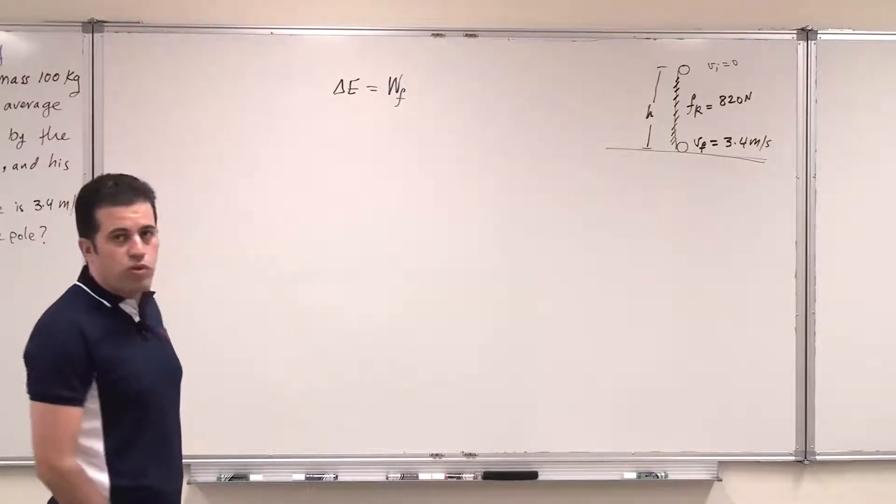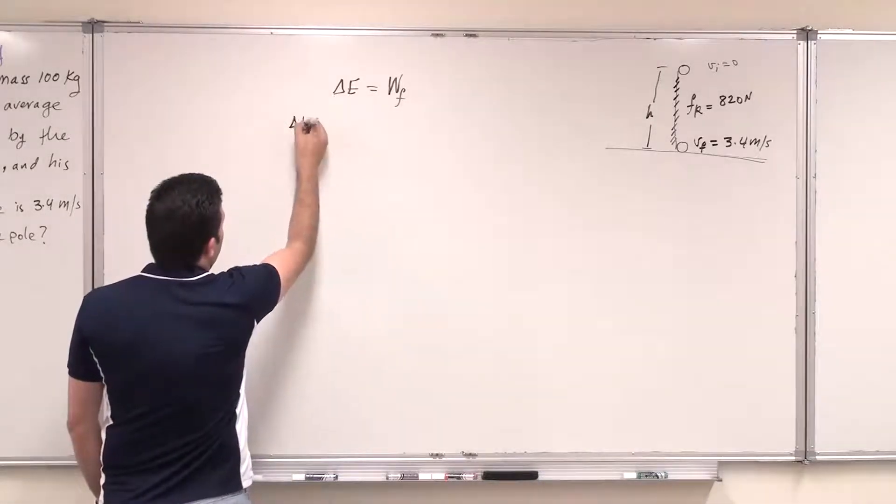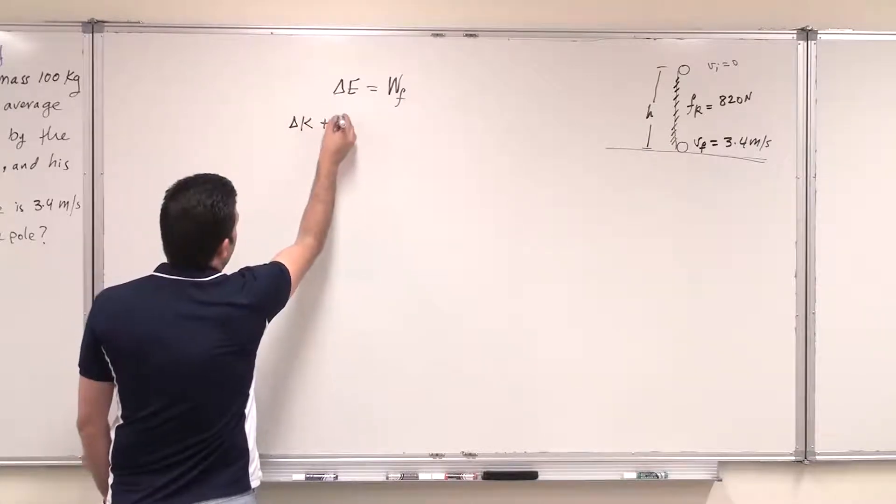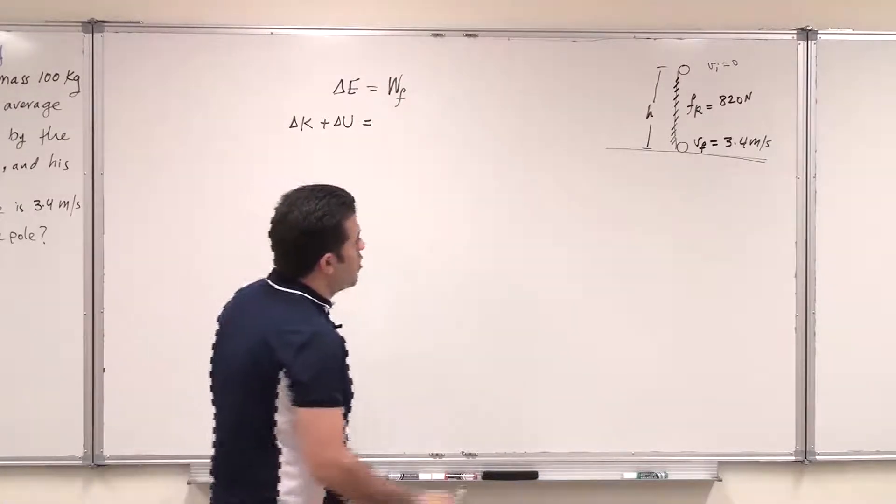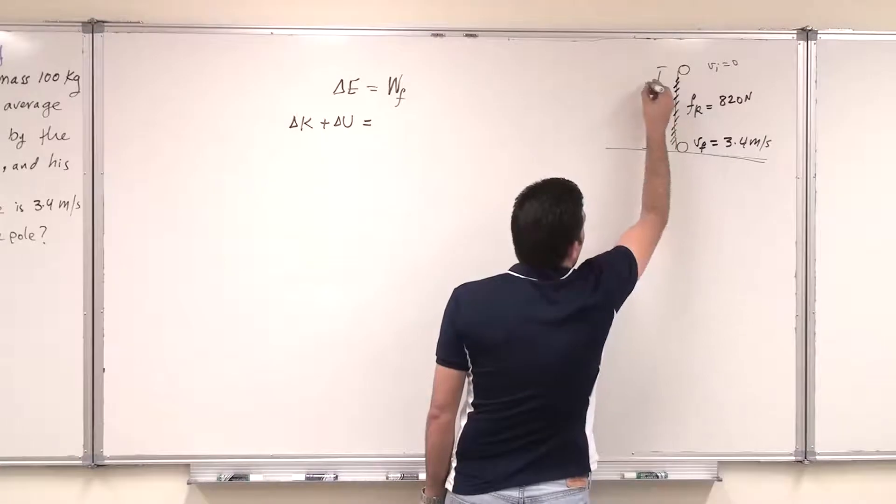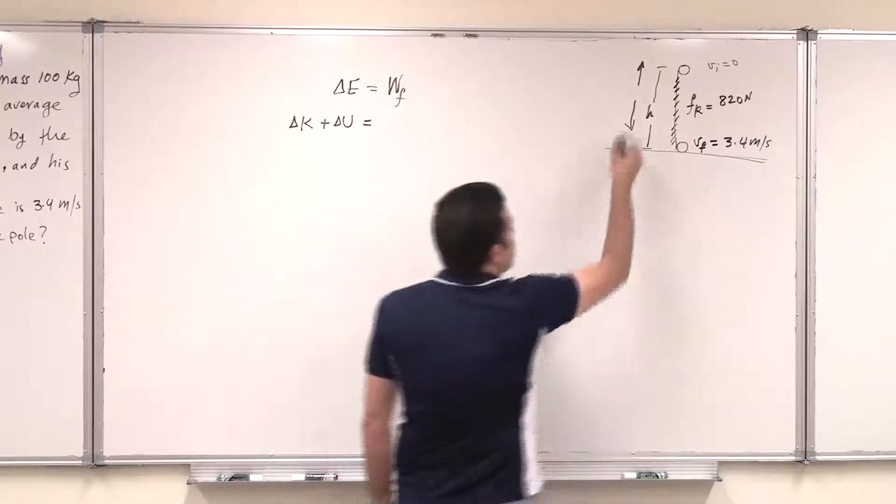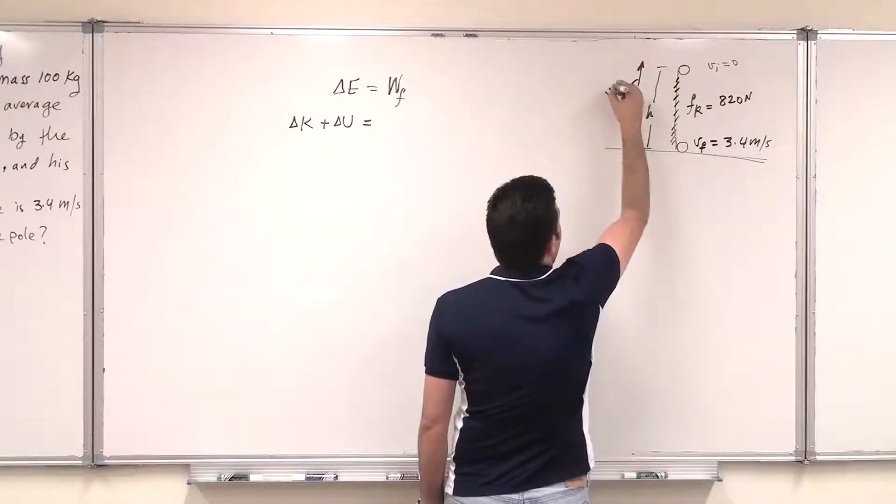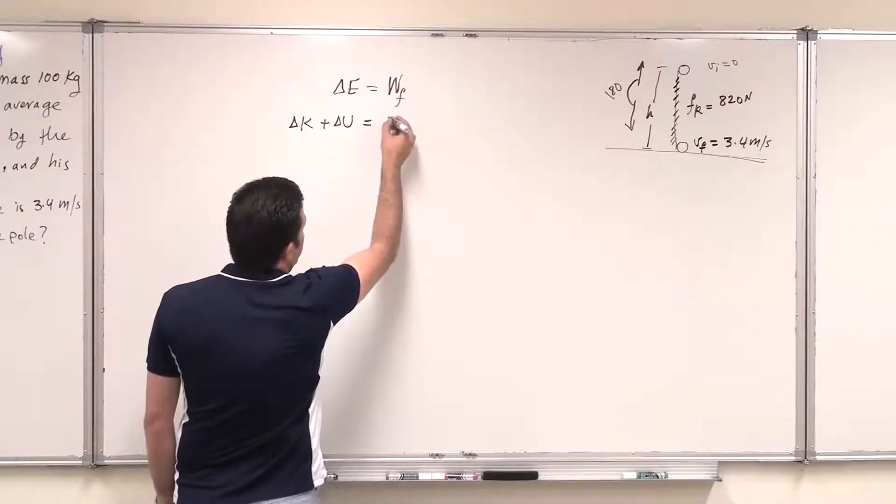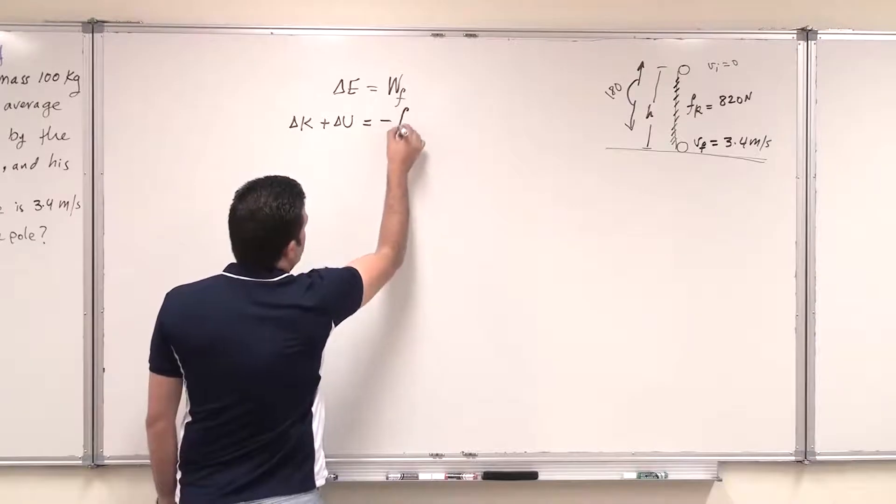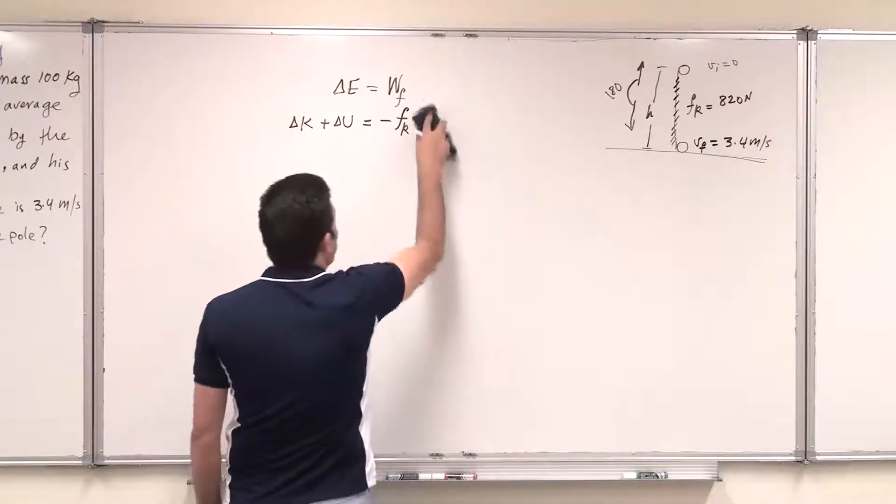I can say that the change in mechanical energy should equal work done by the external force, or the non-conservative force work of friction. So the change in kinetic energy equals change in mechanical energy equals change in kinetic energy plus change in potential energy. And this should equal work of force of friction. But the force of friction is opposite to the direction of the slide, and the direction of the slide is down, so the angle is 180 degrees. As a result, according to f dot d, then I can write that it is negative force of friction, average force of friction multiplied by the distance traveled down, and we call it here h.